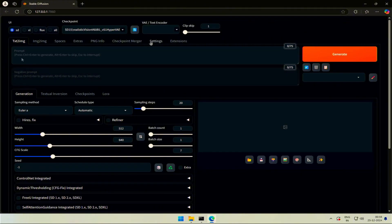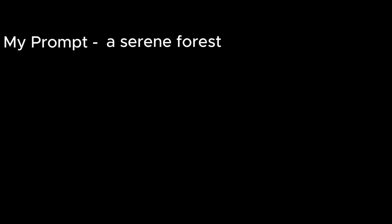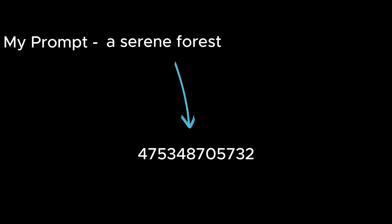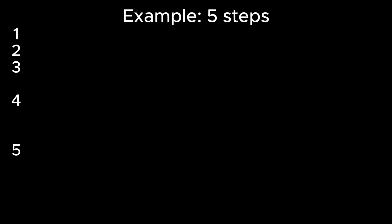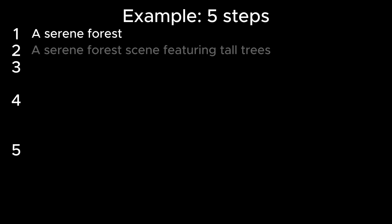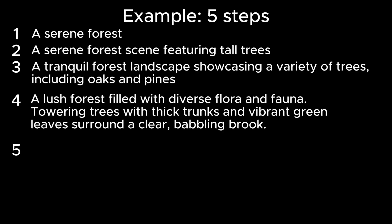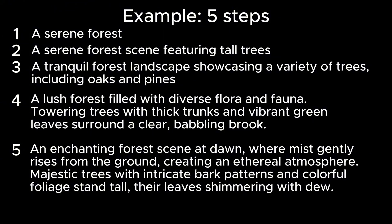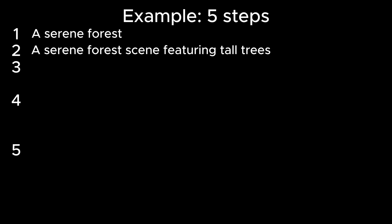When switching back to Stable Diffusion, there is this input field with the title Clip Skip, with a maximum value of 12. Clip Skip works in the clip network of Stable Diffusion models. The prompts we type are understood and converted into tokens so the models can produce an image. There are multiple steps involved in understanding the prompt, and every next step has more details about the subject. Clip Skip controls the number of steps to be skipped — keeping the skip value to 3 means it skips the last 3 steps.